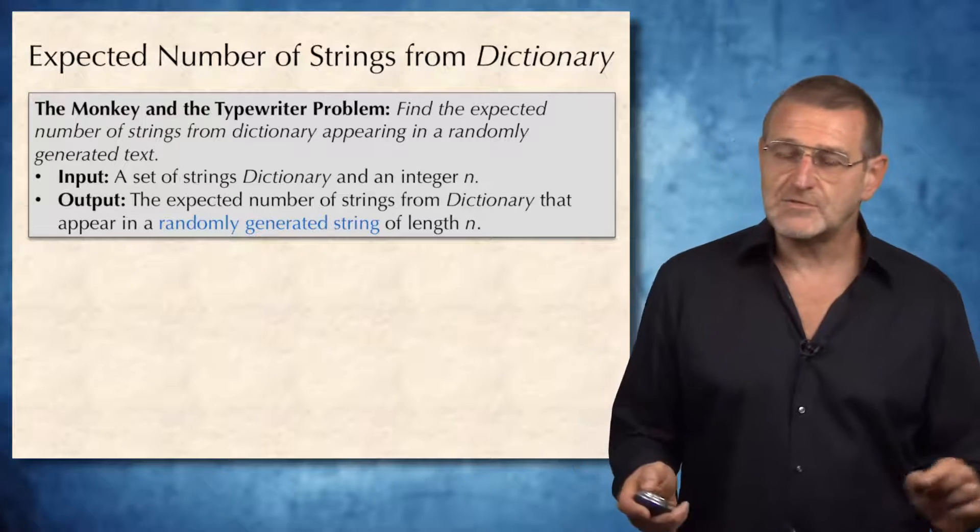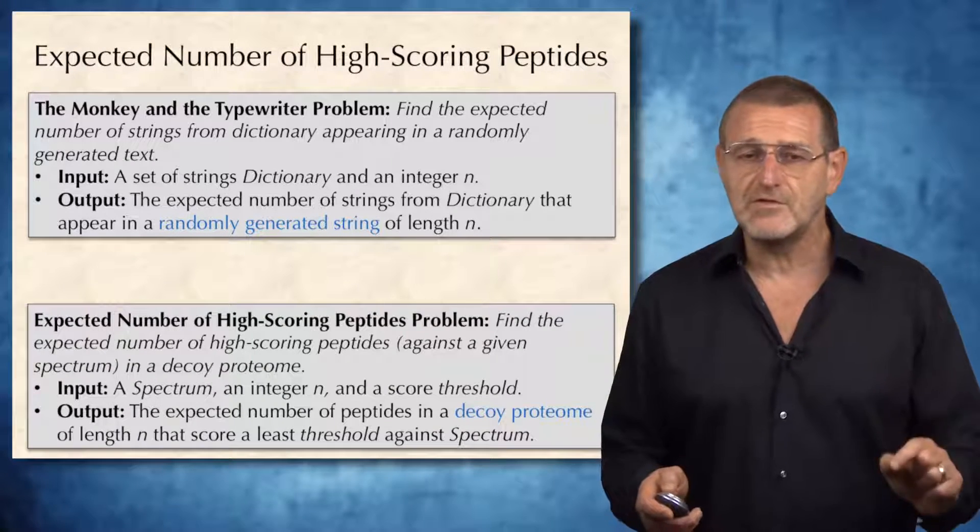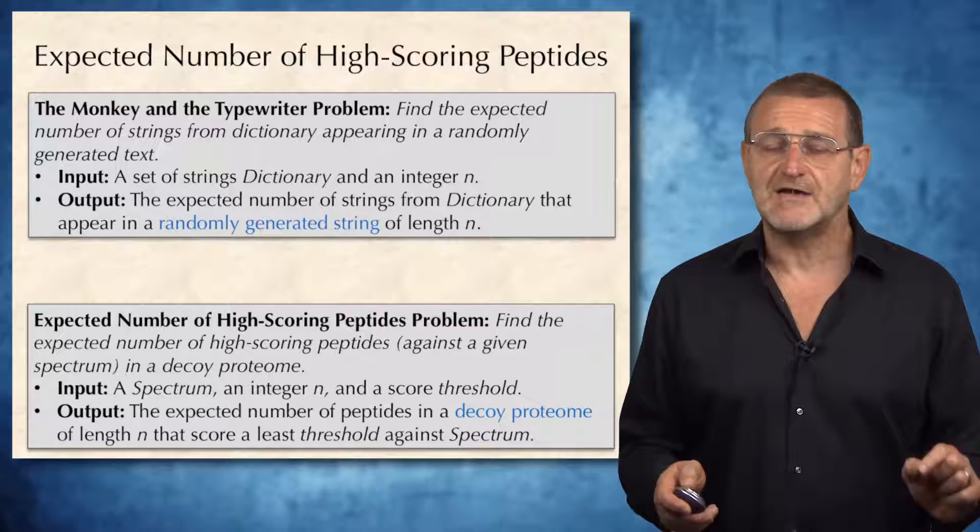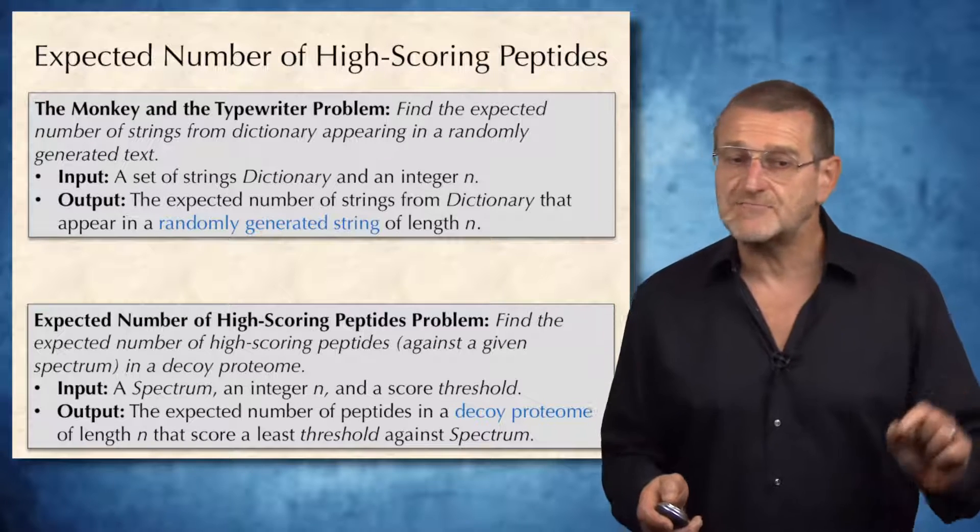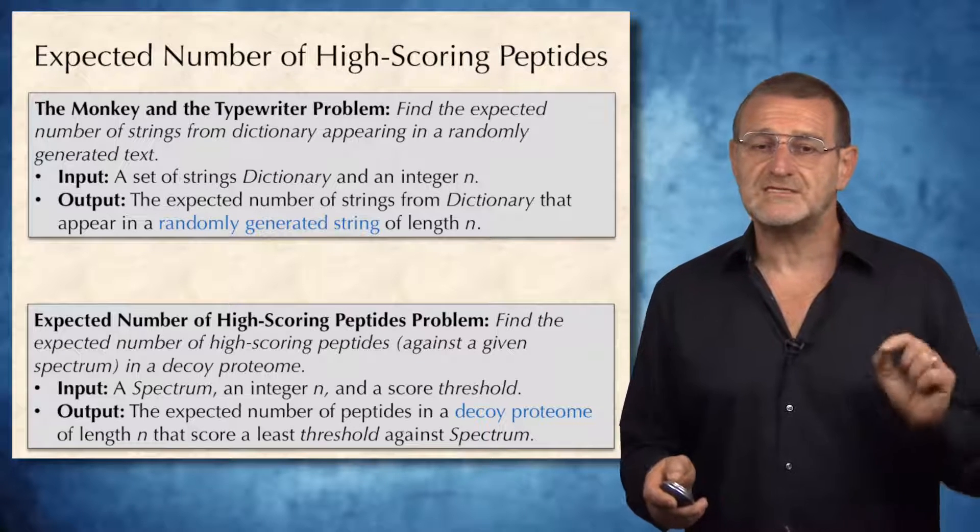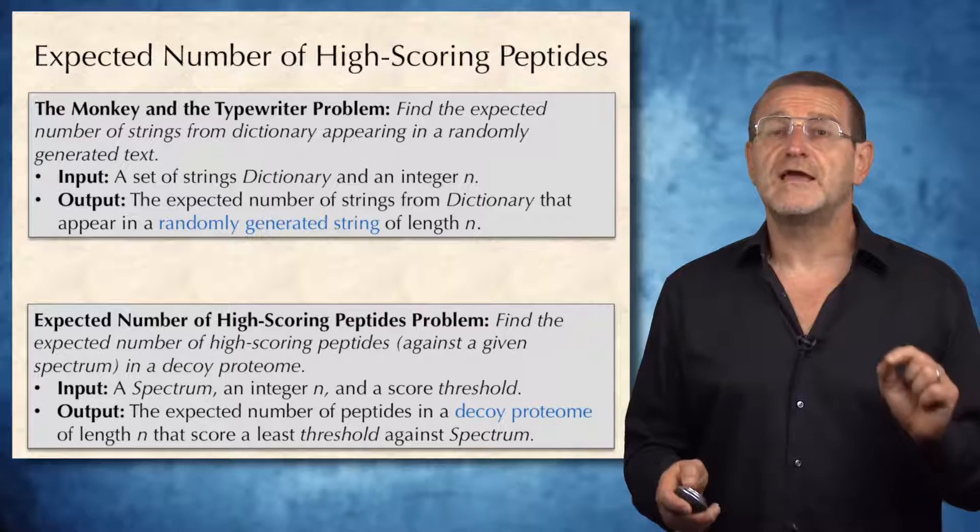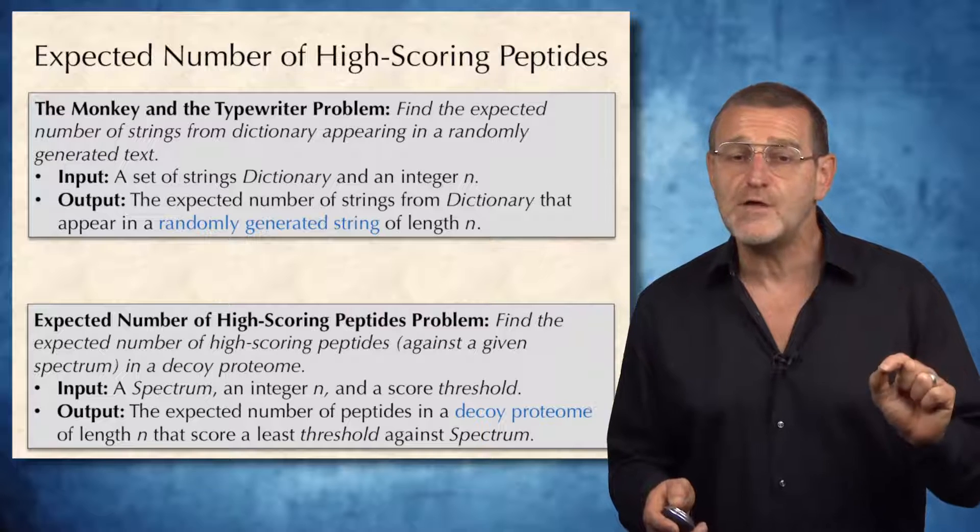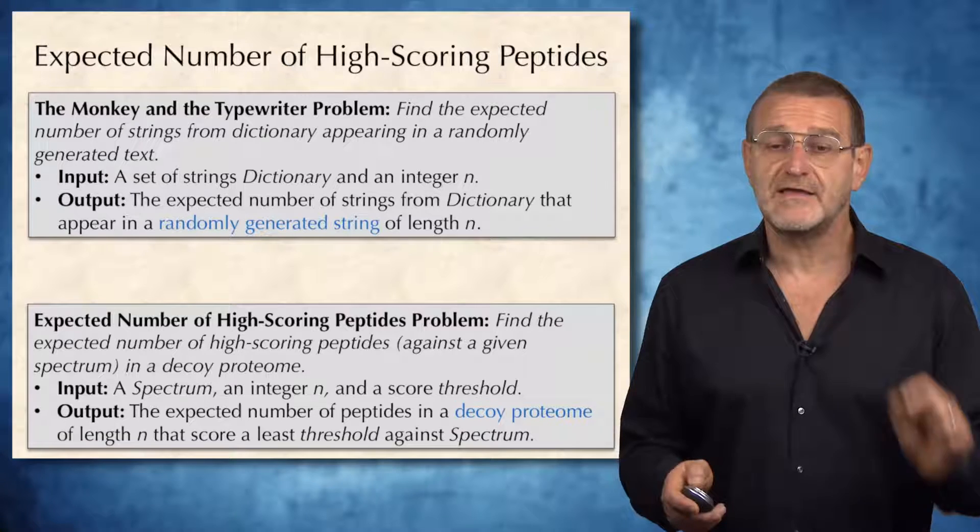But what does it have to do with mass spectrometry? Well, at the same time, we want to solve the following mass spectrometry problem. Find the expected number of high-scoring peptides against a given spectrum in a decoy proteome. The input to this problem is a spectrum, an integer n, and a score threshold. And the output is the expected number of peptides in a decoy proteome of length n that score at least threshold against spectrum.